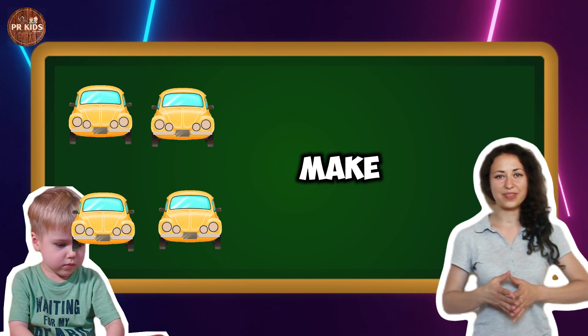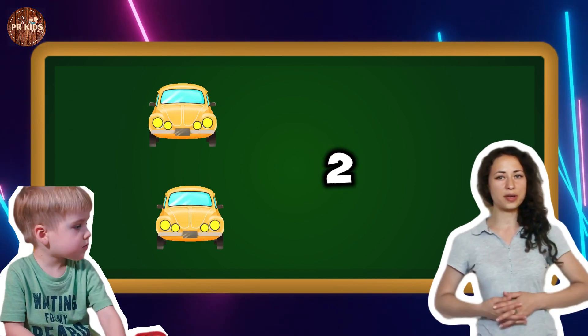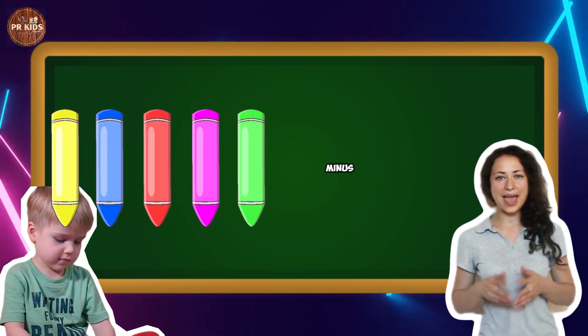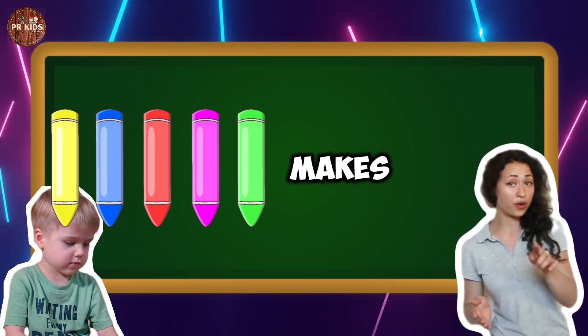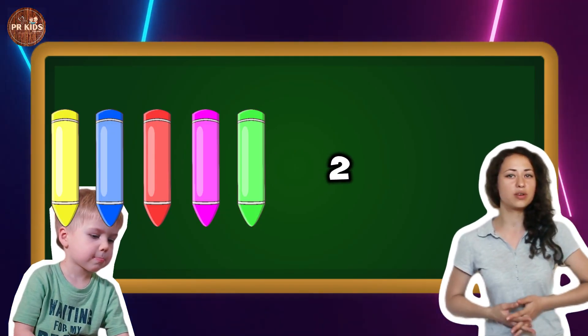...minus two cars make two cars. Two cars left. Five crayons minus three crayons makes two crayons. One, two - two crayons left.